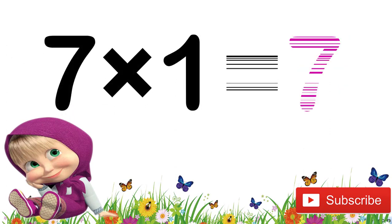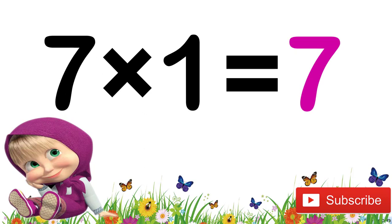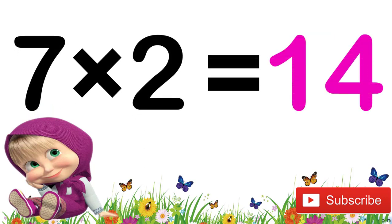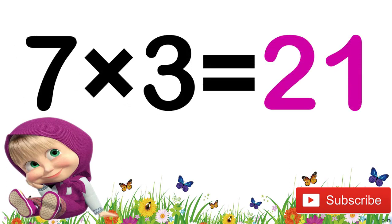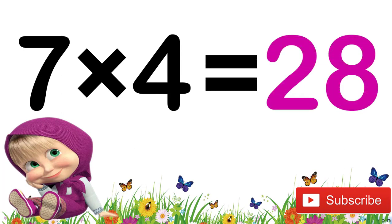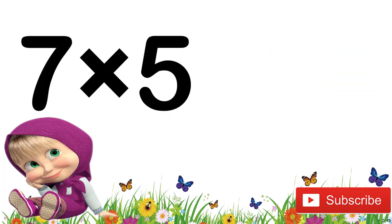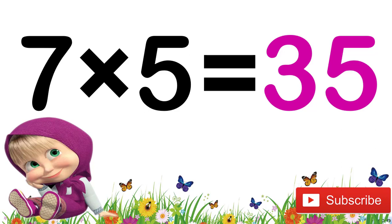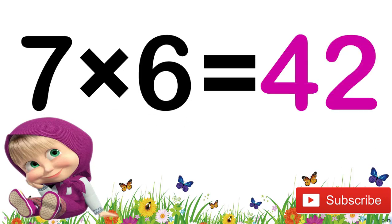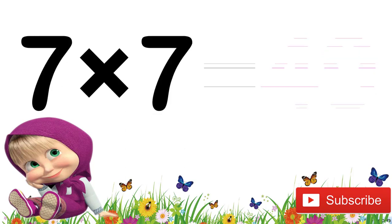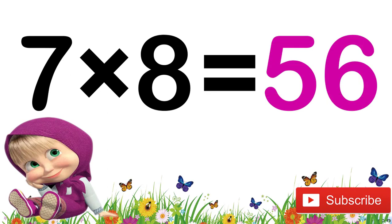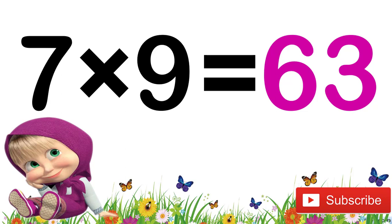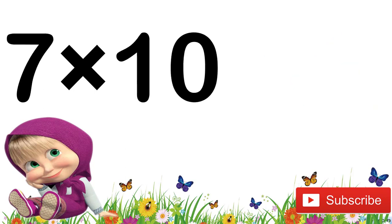7 sevens are 49. 7 eights are 56. 7 nines are 63. 7 tens are 70. Now let's revise again children. 7 ones are 7. 7 twos are 14. 7 threes are 21. 7 fours are 28. 7 fives are 35. 7 sixes are 42. 7 sevens are 49. 7 eights are 56. 7 nines are 63. 7 tens are 70.